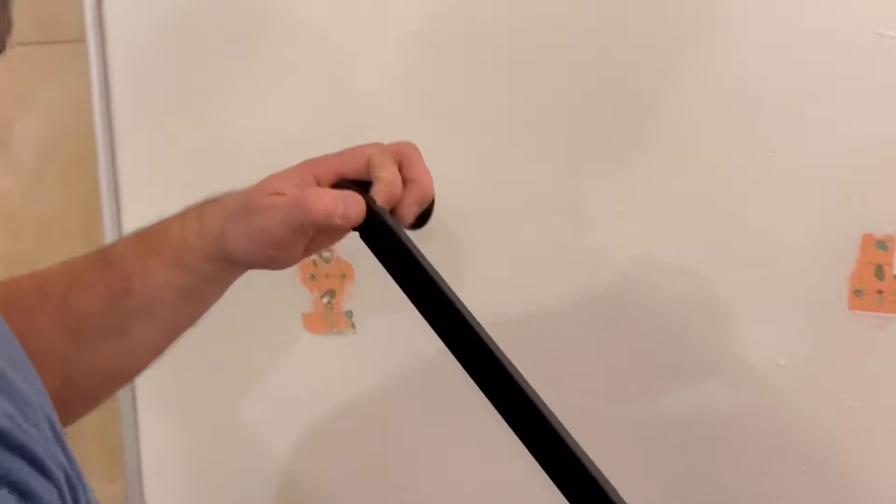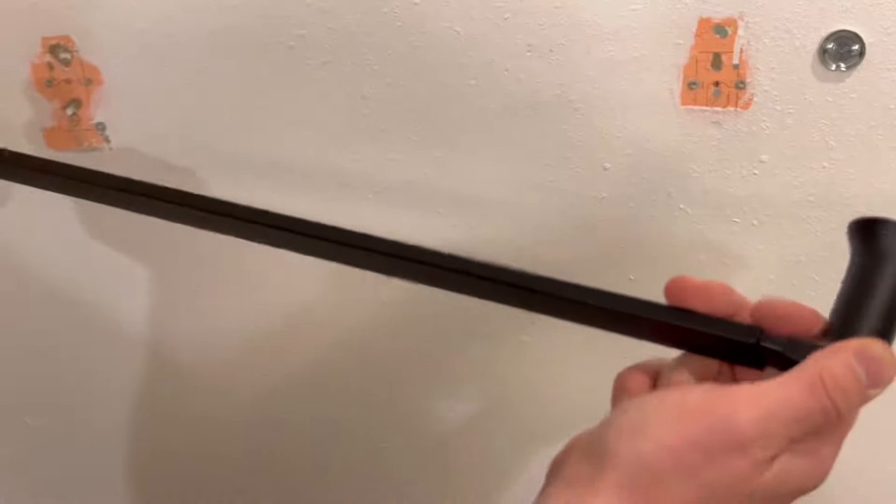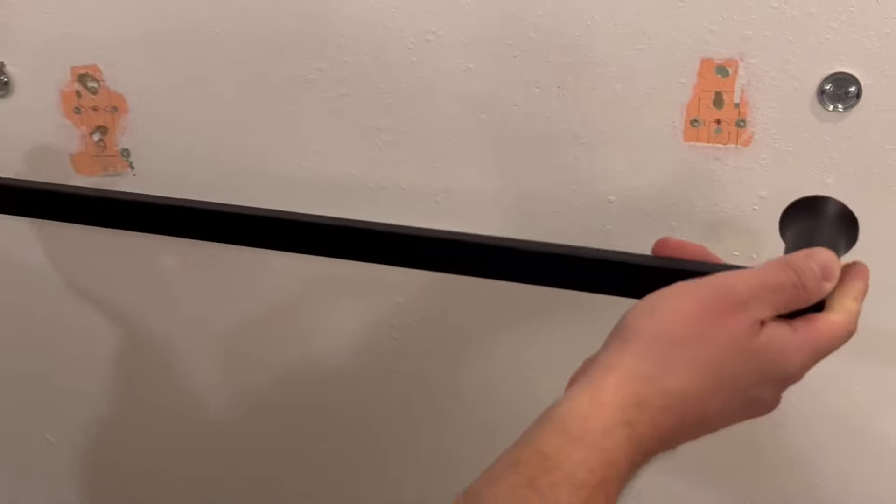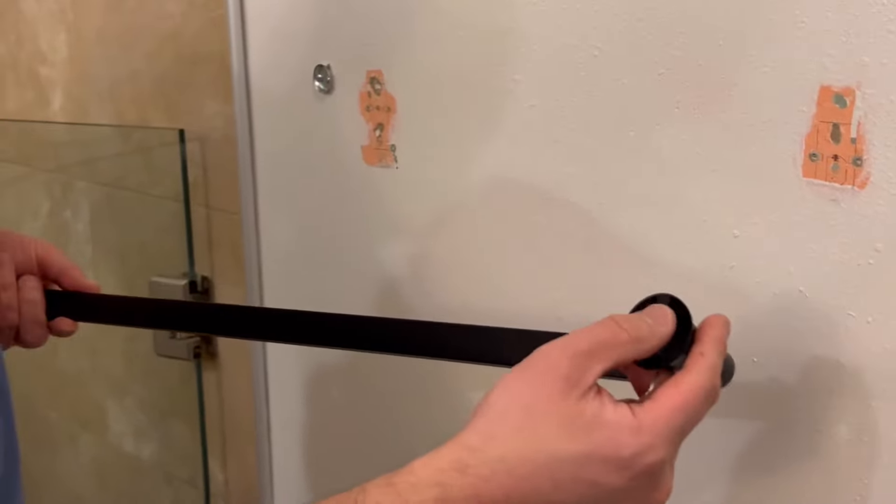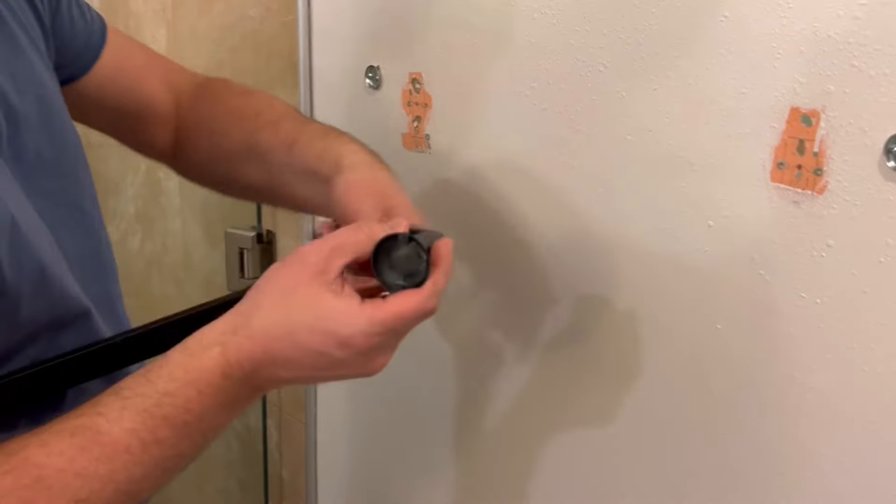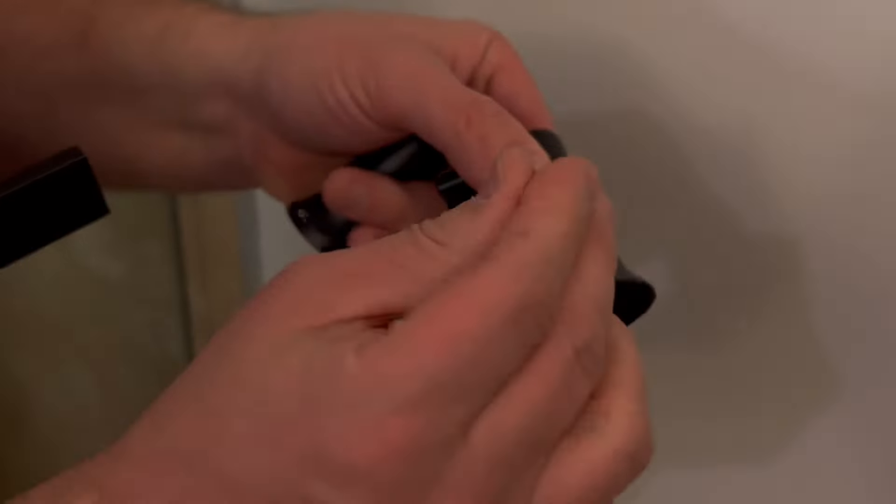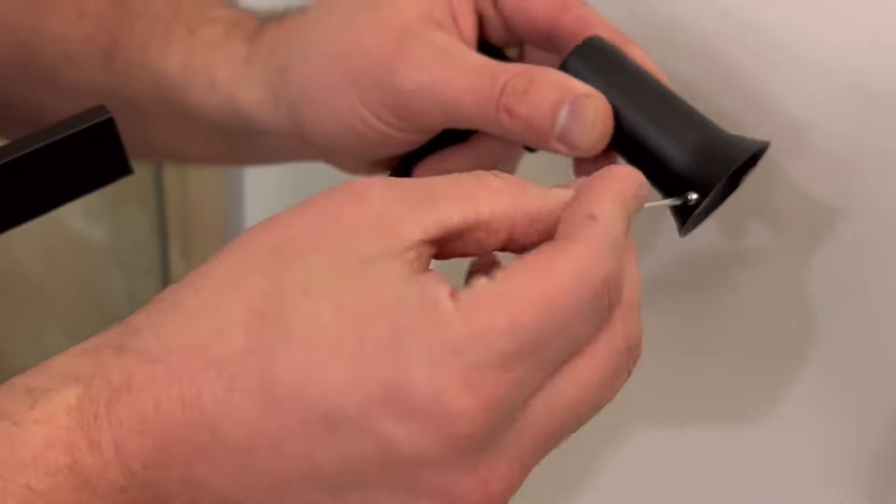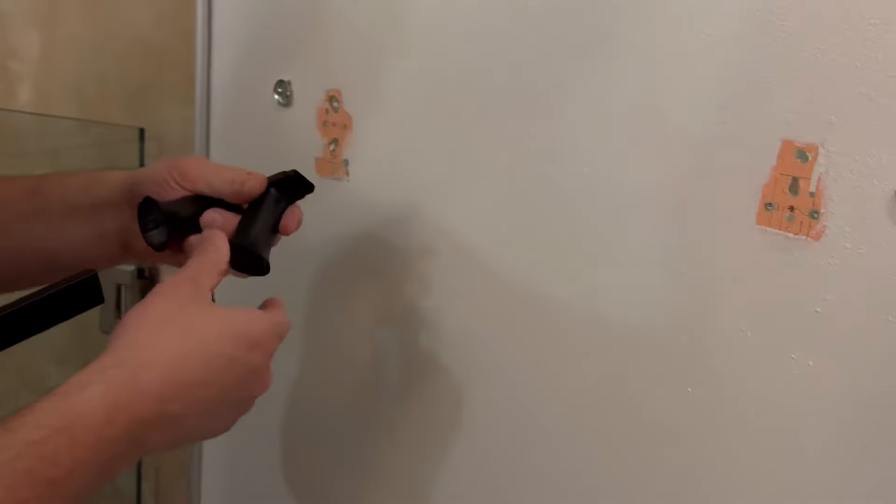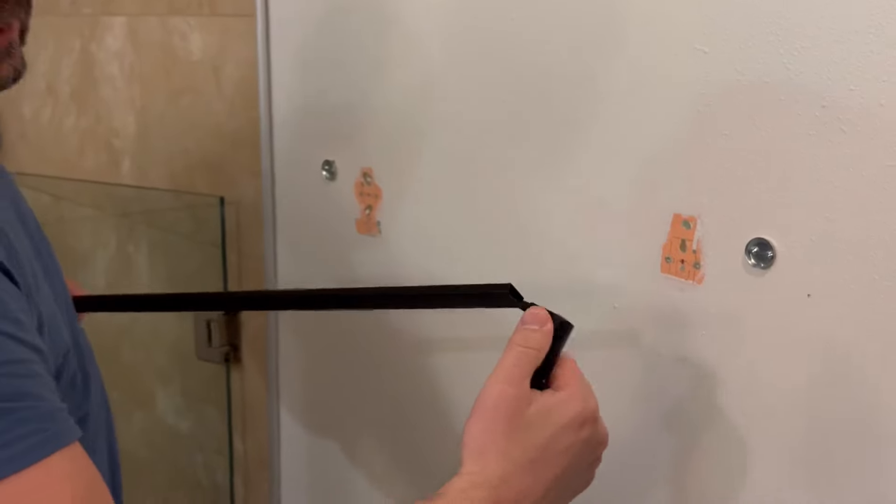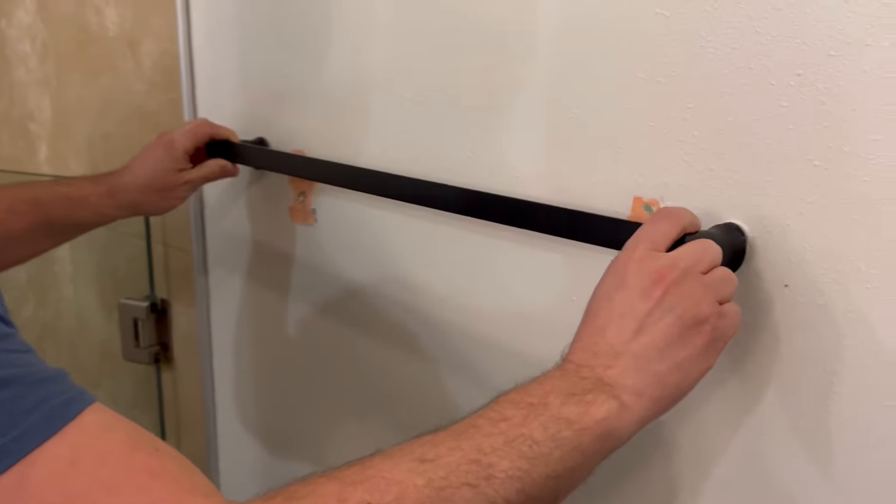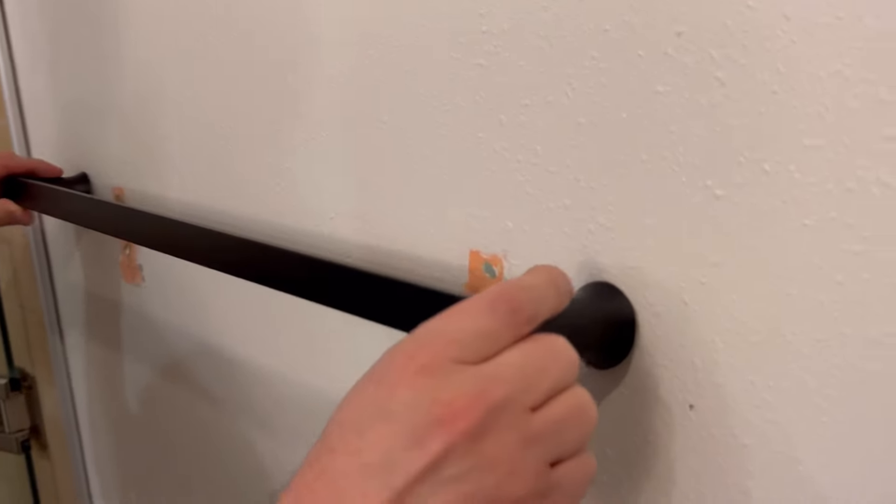This towel holder comes in three pieces so you want to join it together first, and after you have backed off these set screws for each one using an allen wrench. It needs to back off because otherwise it won't slip on. Once they're both backed up, we will then insert the bar, join them together, and slip it over the mounting brackets.